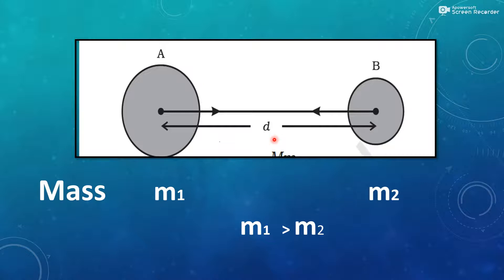Mass of object A is M1 and the mass of object B is M2. As the object A is bigger, so M1 is greater than M2.